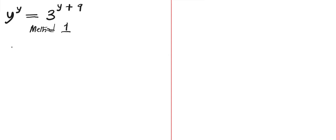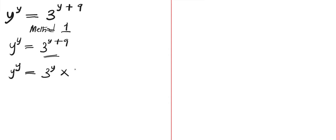So we're going to have y to the power of y equals to 3 to the power of y plus 9. We can apply the index law here. So we are going to have y to the power of y equals to 3 to the power of y times 3 to the power of 9.